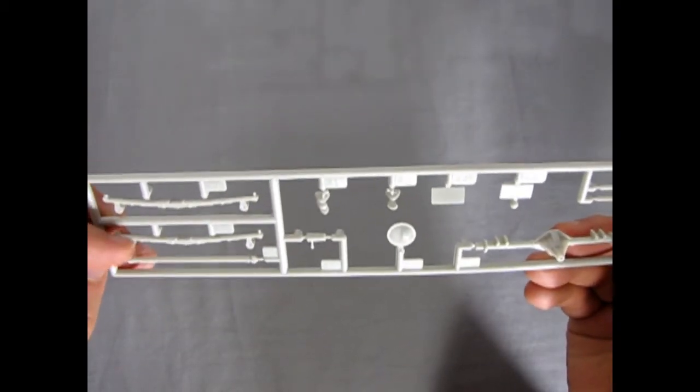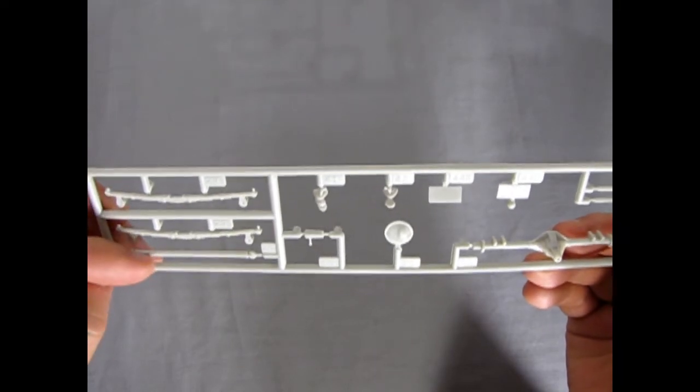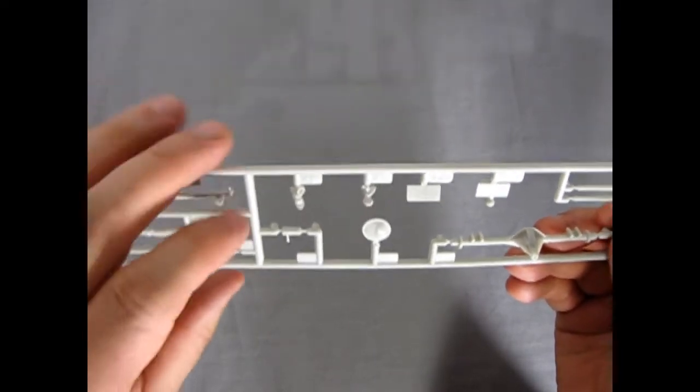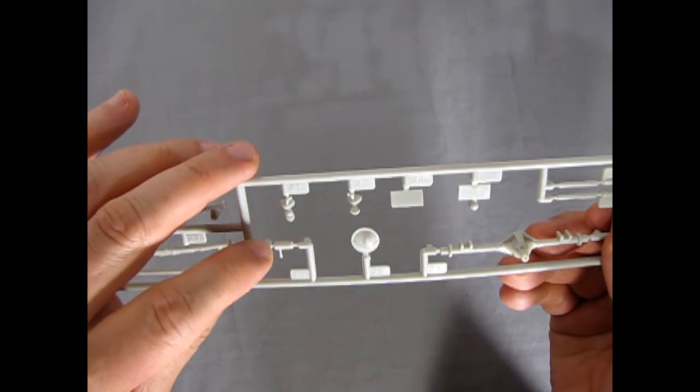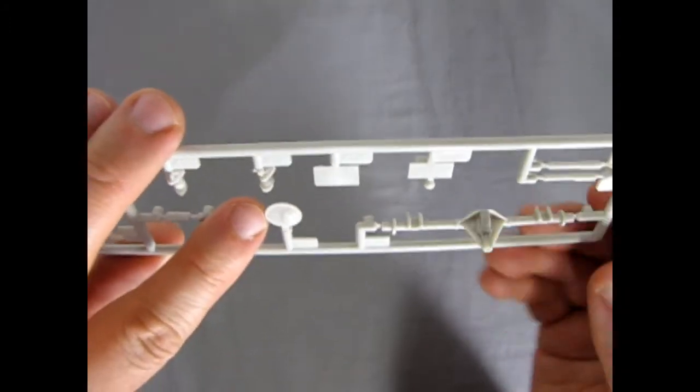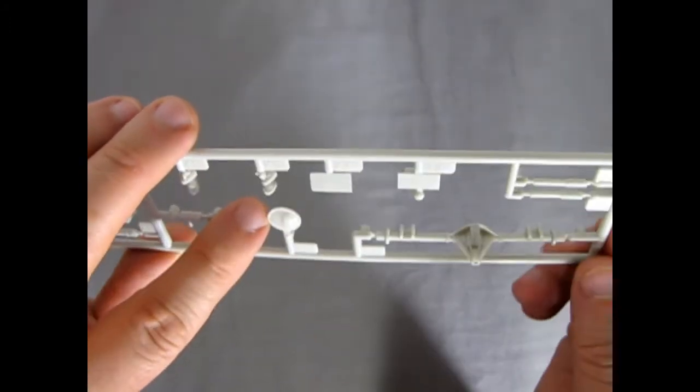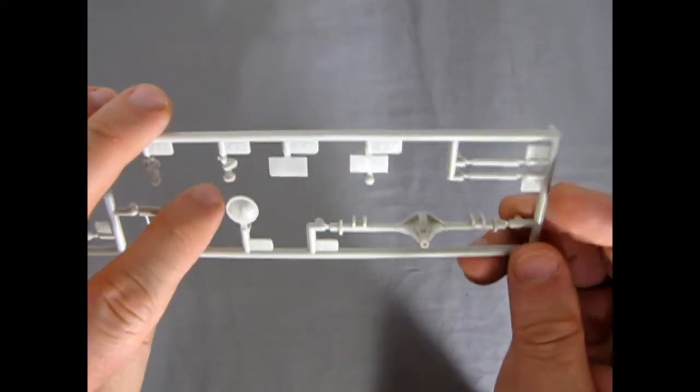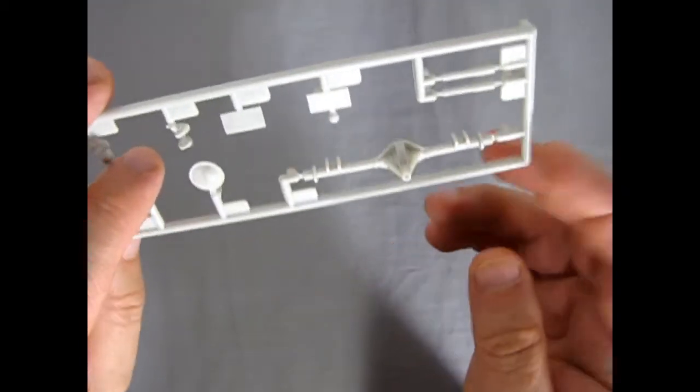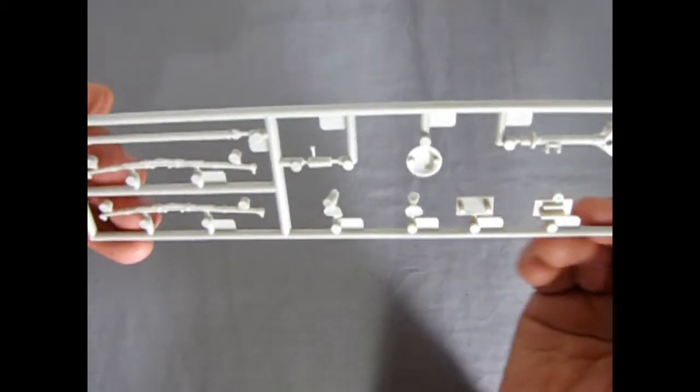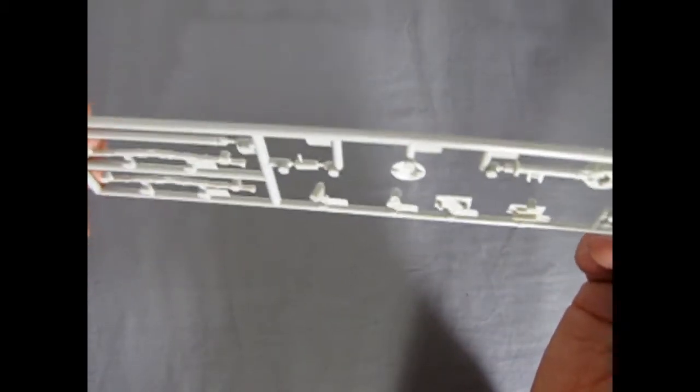Okay, so there's our rear leaf springs. The drive shaft, our side mirrors, steering column. Nice detail on the differential cover. License plates, shock absorbers, and the differential itself. So again, a little bit of mold marks and stuff on the back. But easily taken care of.